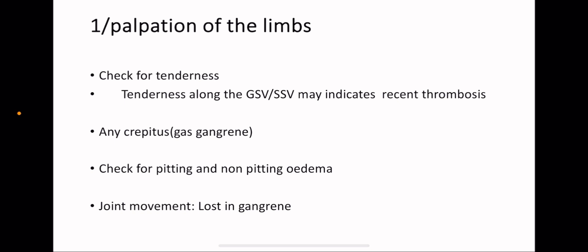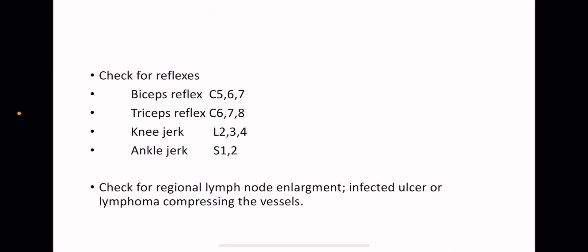We're still in the palpation of the limb. Check for tenderness. Tenderness along the greater saphenous vein and small saphenous vein may indicate recent thrombosis. Check for any crepitus which may indicate gas gangrene. Check for pitting and non-pitting edema and check for joint movement. Usually joint movement will be lost in gangrene.